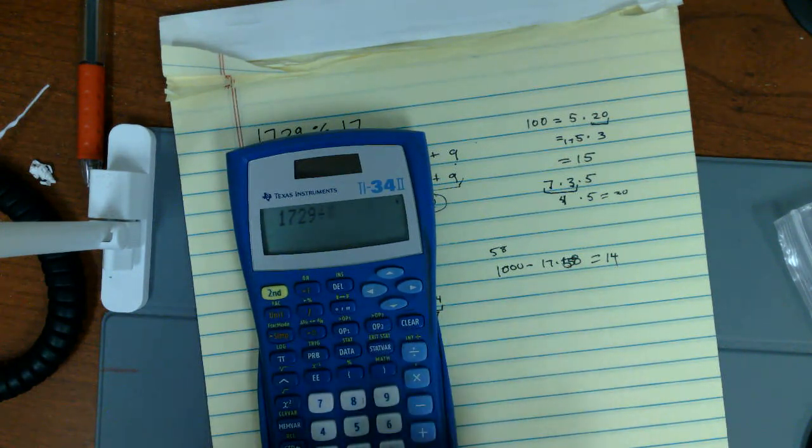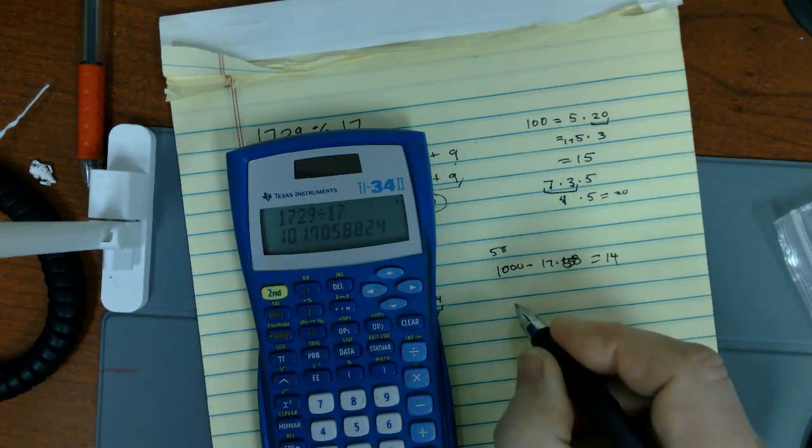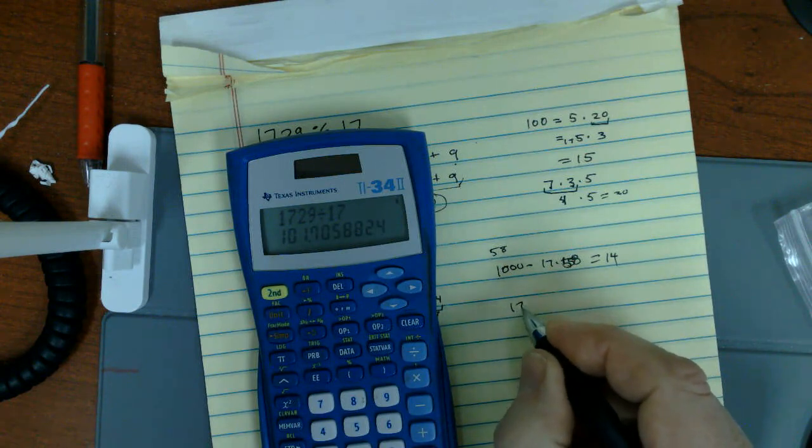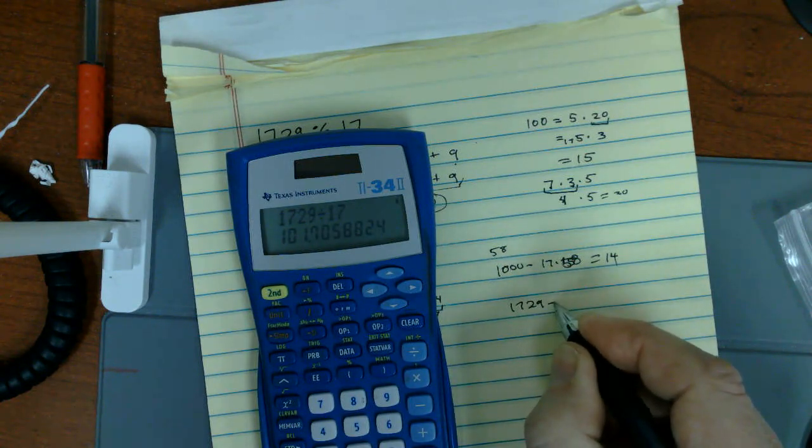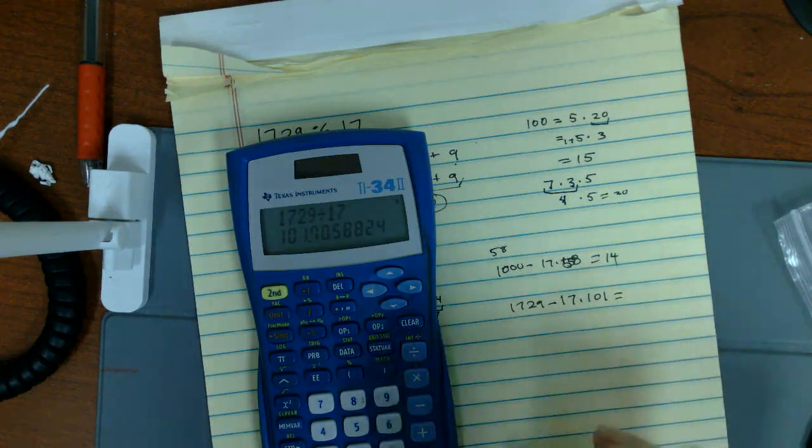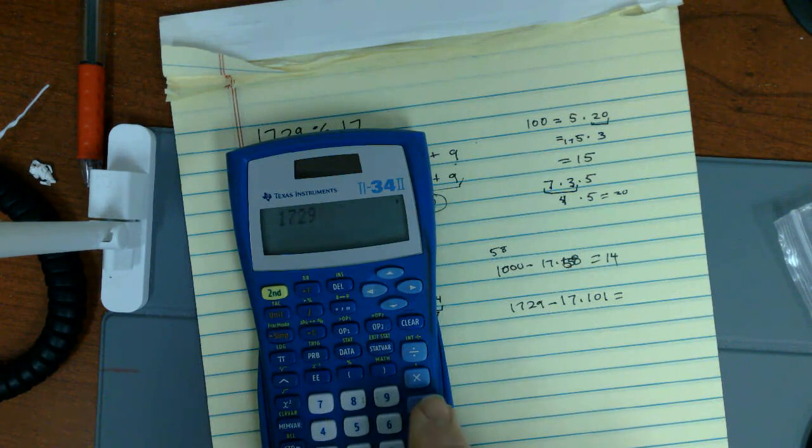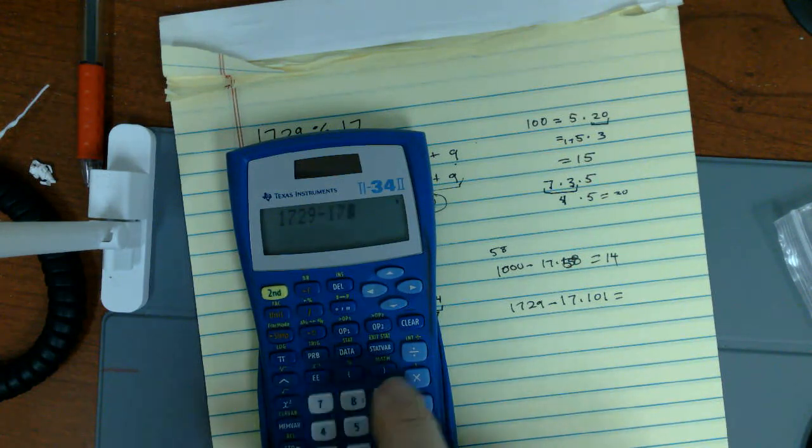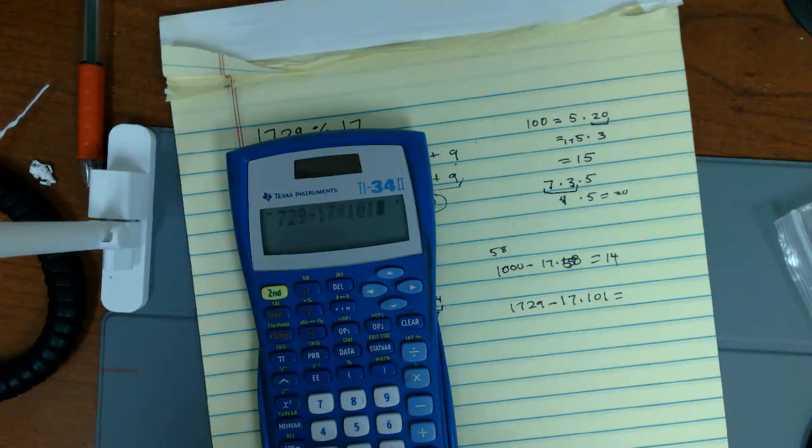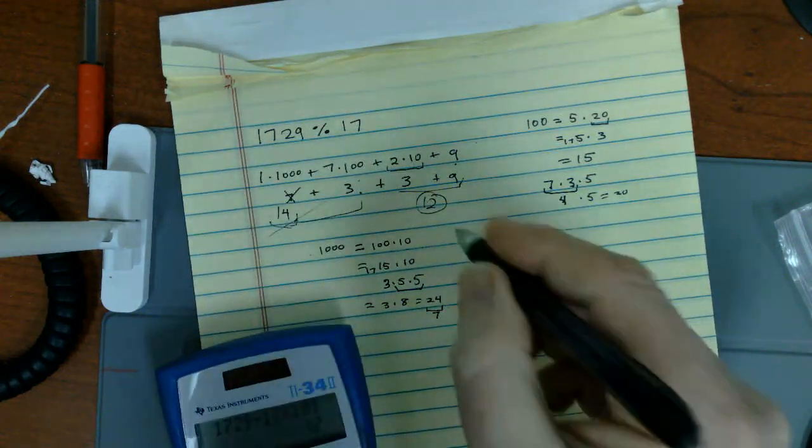1729 divided by 17. So I would take 1729 minus 17 times 101. So 1729 minus 17 times 101 is equal to 12. And I'll be damned. It's the same one.